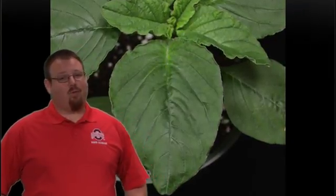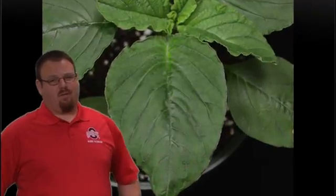Lastly is our red root or smooth pigweed leaf. These are typically more egg shaped and widest towards the middle.